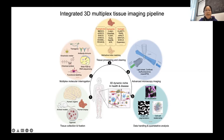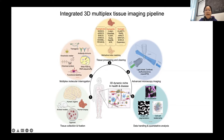In general, the 3D tissue imaging pipeline includes five steps. The first step is tissue collection and fixation — which tissue you are interested in and how to fix it to crosslink the proteins, DNA, or RNA. The second step is how to label the tissue. For animal models we can use advanced transgenic tools or virus tracing, but for human organs we can only rely on post-staining methods using antibodies or DNA probes.